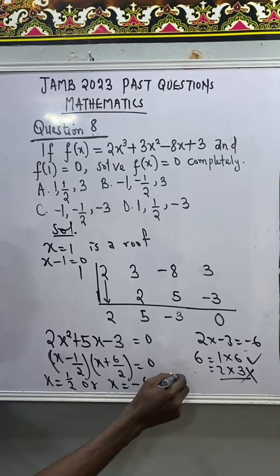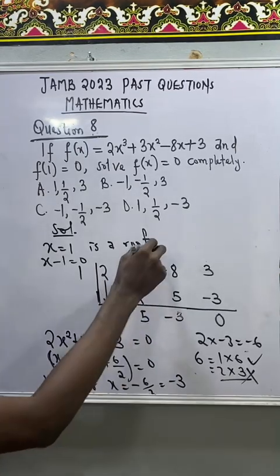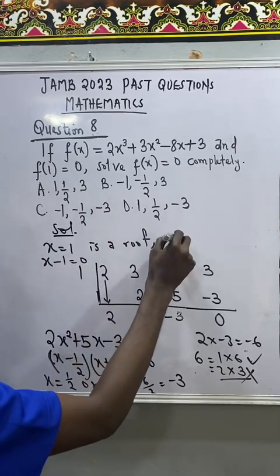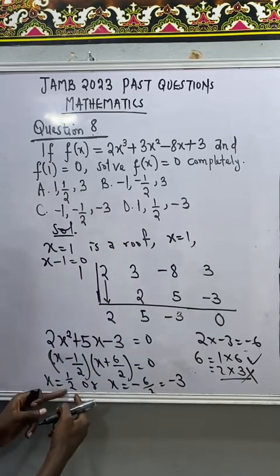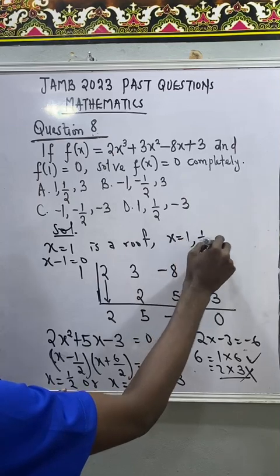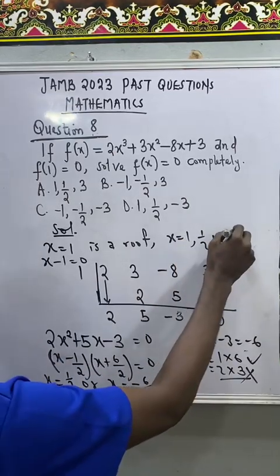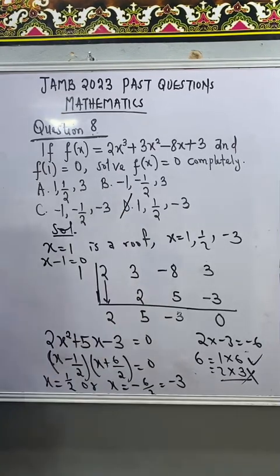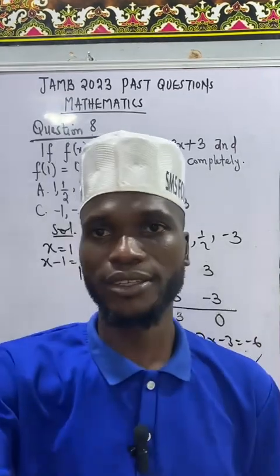Therefore, all of the roots that we need are going to be x, we already have x equal to 1, comma, the second one is 1 over 2, and the third one is minus 3. Let's see which options satisfy. Option D satisfy our answer. Thank you.